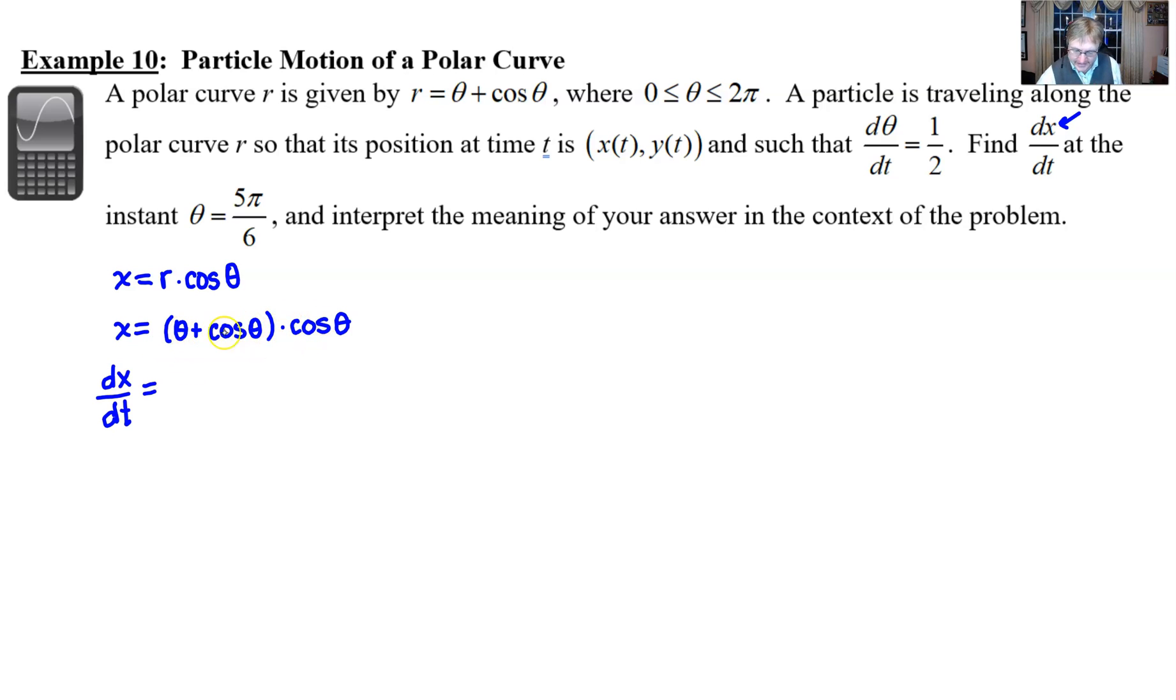You could distribute the cosine through if you thought that that was easier. It's really about the same level of difficulty. I'm going to keep it the way it is. So if we take the derivative of theta plus cosine theta with respect to t, we get dθ/dt plus negative sine, which I could write as minus sine theta. And then we'll multiply by another dθ/dt.